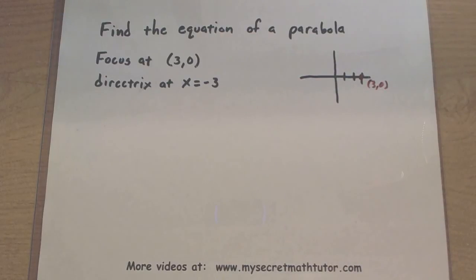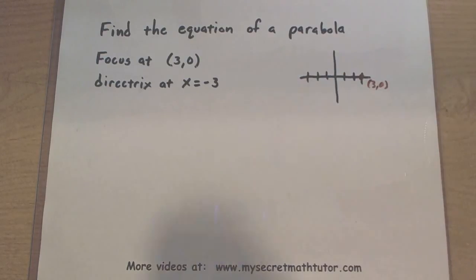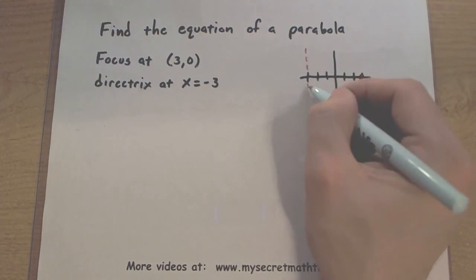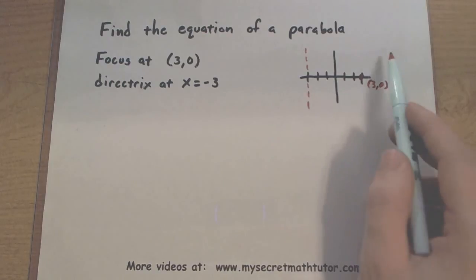The directrix is at x equals negative 3, so we're way back here at negative 3. Now, with those two bits of information, I know which direction my parabola is facing because I know the focus is on the inside of that parabola. So I basically know it's going on its side.